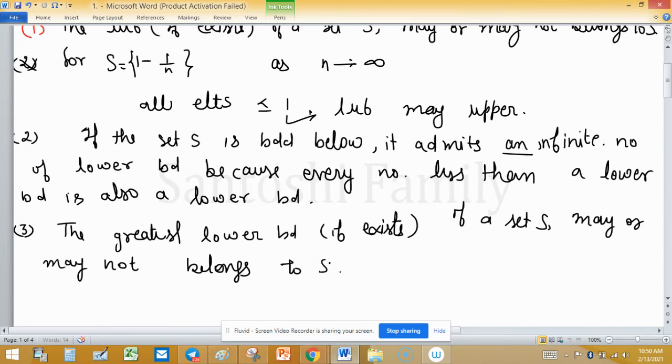For example, one upon n, one is the greatest lower bound.